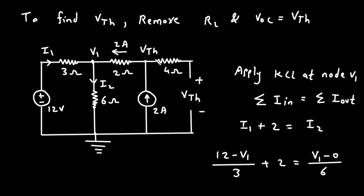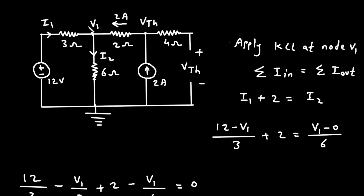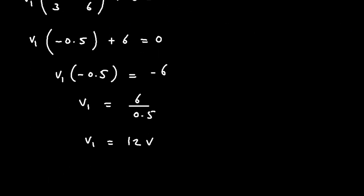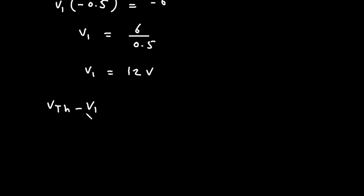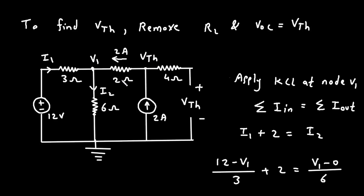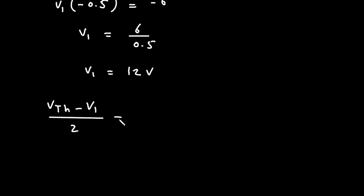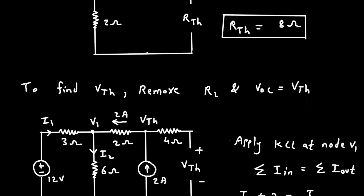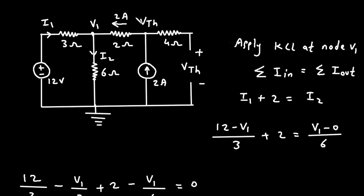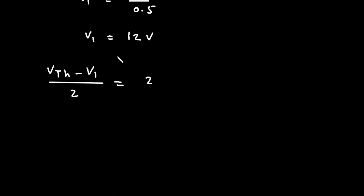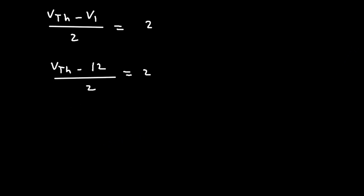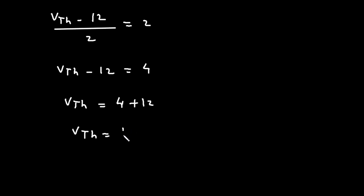Now since we got the value of V1, but here we have to find the value of VTH. Now VTH minus V1 divided by 2 ohm is equal to 2 ampere. Here we can see VTH minus V1 divided by 2 is equal to 2 ampere. V1 is 12, so VTH minus 12 divided by 2 is equal to 2. So VTH minus 12 is equal to 4, therefore VTH is equal to 4 plus 12, which gives VTH equal to 16 volt.